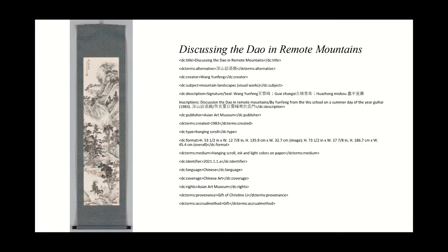Previously I mentioned inscriptions and that there was not a specific inscription section in Dublin Core, but it would go under description — here's a perfect example. We have an inscription on the painting that says 'Discussion in the Dao in remote mountains by Yun Feng from the Wu school on a summer day of the year Guihai, 1983.' And if you look down to DC format, I found that the dimensions of an object can go into the format section — that is something of note.